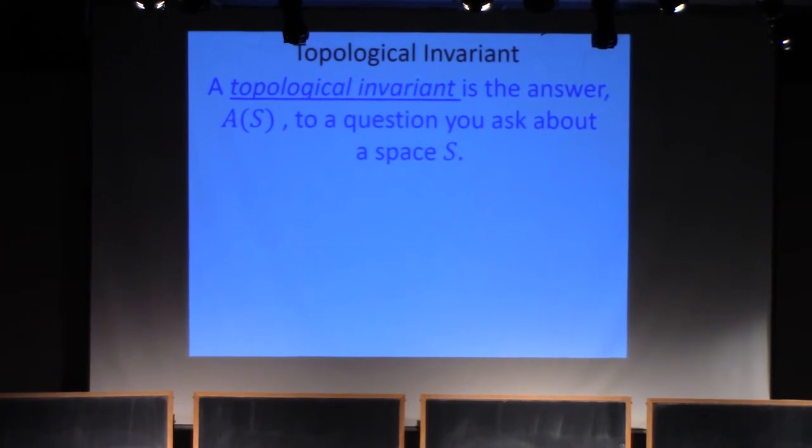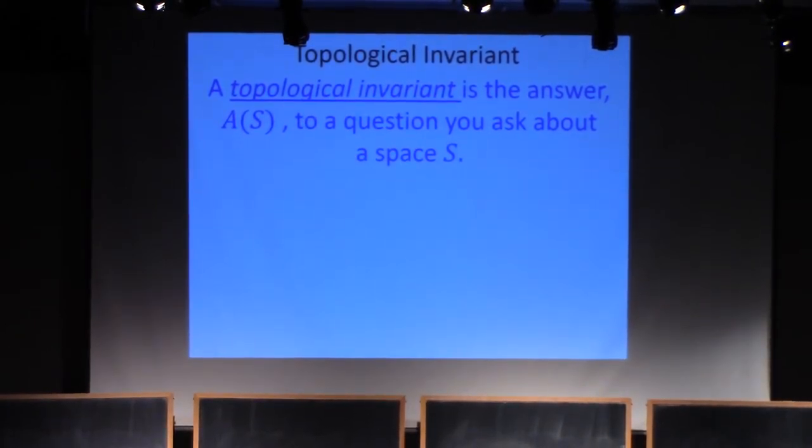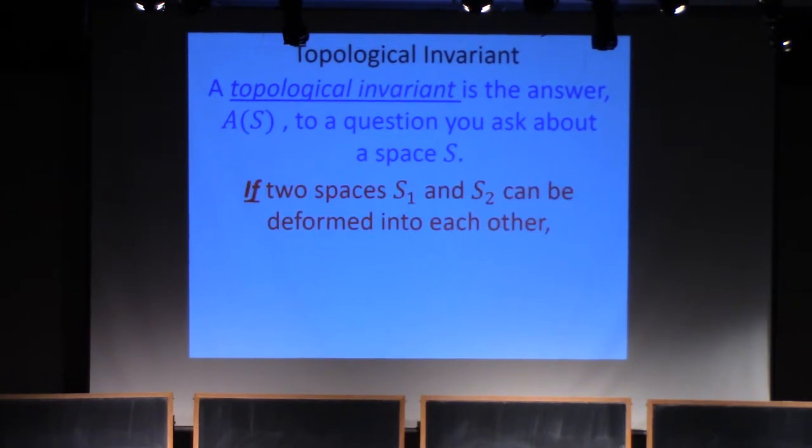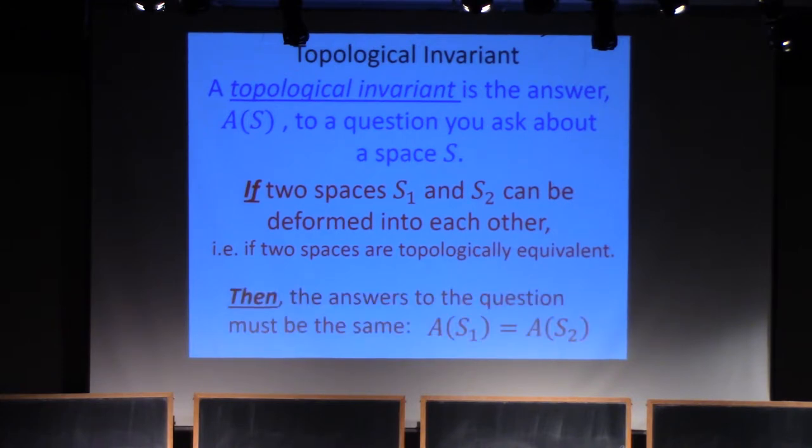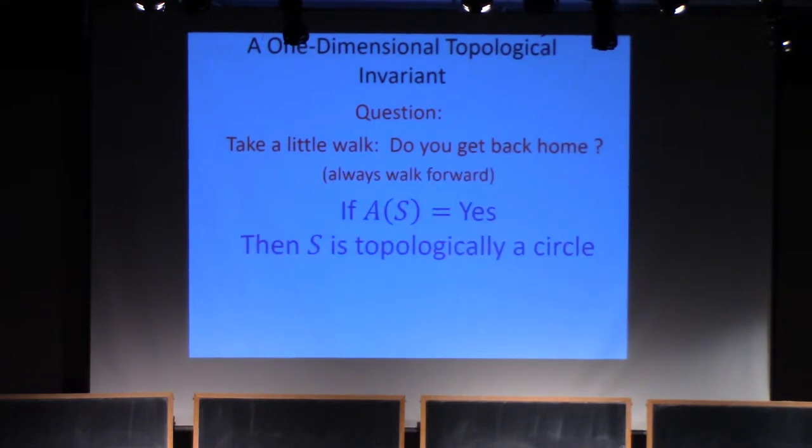A topological invariant is the answer, A of S, to a question you ask about a space S. If two spaces can be deformed into each other, that is, if they're topologically equivalent, then the answers have to be the same. Here's a one-dimensional topological invariant. What's the question? Take a little walk till you get back home. You always walk forward. If the answer is yes, then S is topologically a circle. If the answer is no, it's topologically a line.